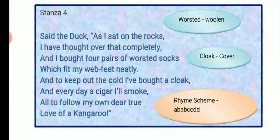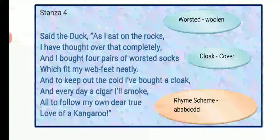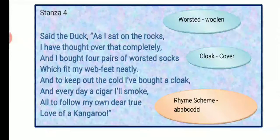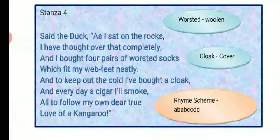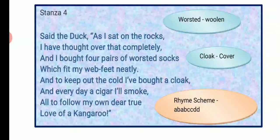Stanza 4: 'Said the duck, as I sat on the rocks, I have thought over that completely. And I bought four pairs of worsted socks which fit my webbed feet neatly. And to keep out the cold, I have bought a cloak, and every day a cigar I'll smoke — all to follow my own dear true love of a kangaroo.' Worsted socks means woolen socks. Cloak means a cover — an overcoat we wear to protect from cold or sunlight.